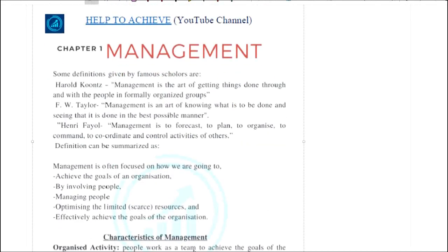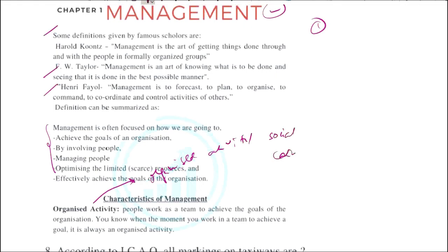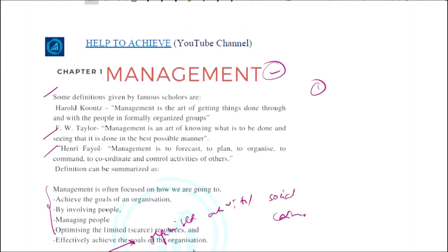This is how the book contents look. For the management chapter, you'll see definitions given by famous scholars like Taylor and Fayol, then the summary of management, and then characteristics of management like how it is an organized activity, a social process, a continuous process, and so many things are added.